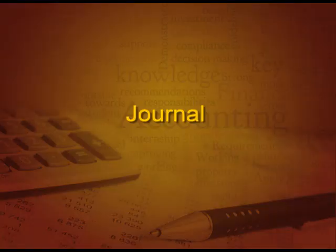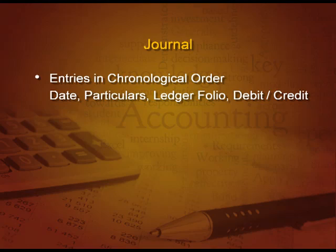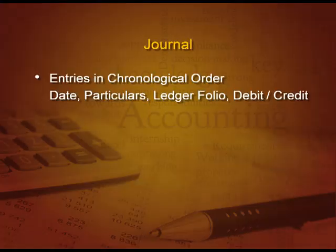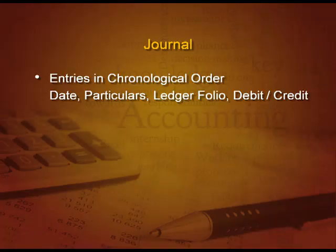What is a journal? Journal records entries in chronological order, that is date-wise order. We have four columns: first column is date — the date of the transaction; then particulars, where we write what is to be debited and what is to be credited; then there is a ledger folio column, a very small column in which we write the page number of the ledger where this particular account or entry is noted.